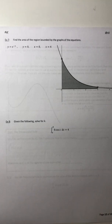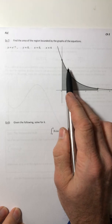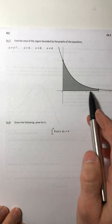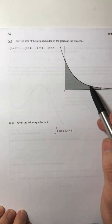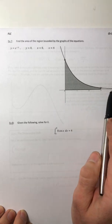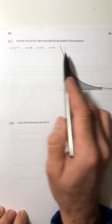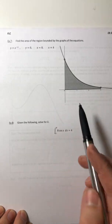All right, mathletes, in this last video for section 5.5, we're going to start by finding the area of the region bounded by the graphs of the equations. So we're looking at y equals e to the negative x, which is this curve, bounded by y equals 0, so the x-axis, and then in between x equals 0 and x equals 4, so this curvy triangle shape thing.